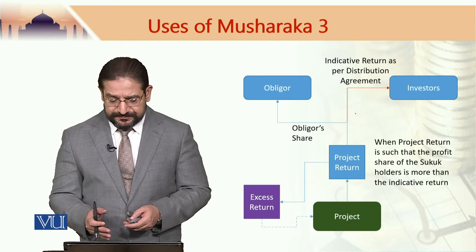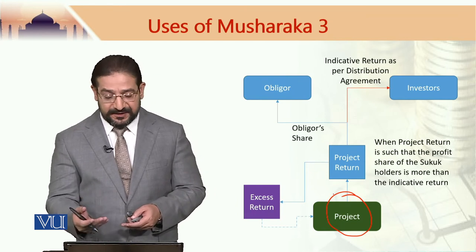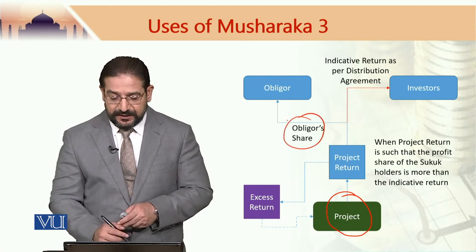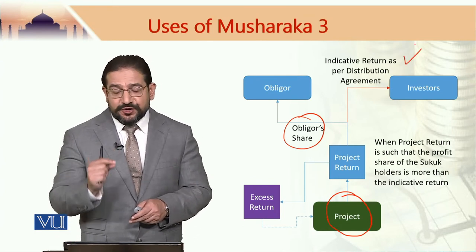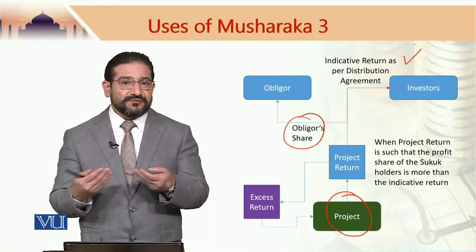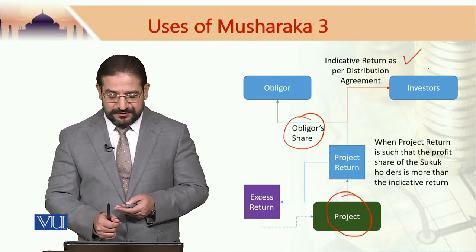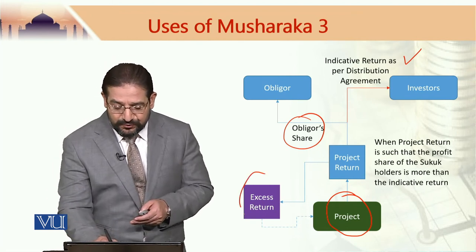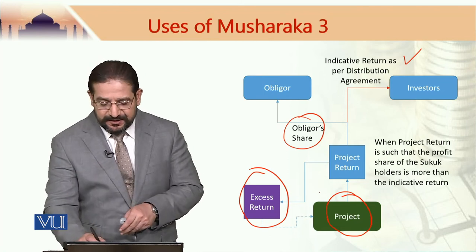The funds are there, the project gets funded, and if there is any return, that return actually goes to the two major partners — i.e. the Obligor and the investors. The investors get their share in such a way that the share going to the Sukuk investors is equivalent to the indicative rate of return. If it was 3 percent, 4 percent, or 5 percent, only that much of the return would be distributed amongst the investors and if there is any excess, that would go into an excess fund or could be reinvested in the project.